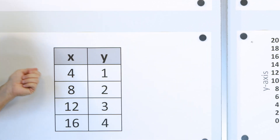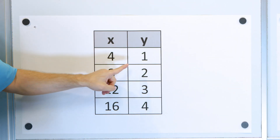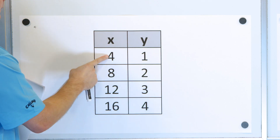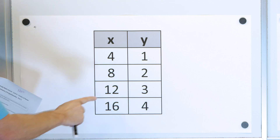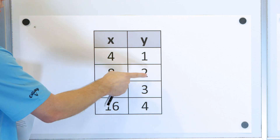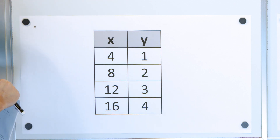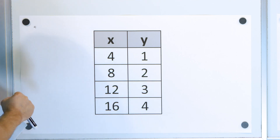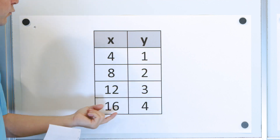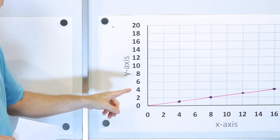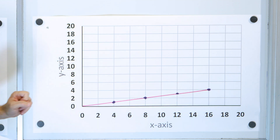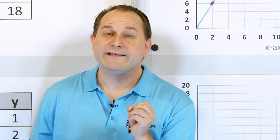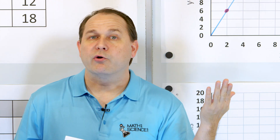Let's look at the other example: points (4, 1), (8, 2), (12, 3), and (16, 4). Taking Y divided by X — 1 divided by 4 is one-fourth; 2 divided by 8 simplifies to one-fourth; 3 divided by 12 is again one-fourth; 4 divided by 16 is again one-fourth. We get the same number, one-fourth, so these points form a line that intersects the origin, and we say they form a proportional relationship.